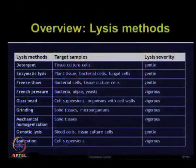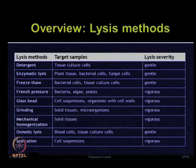Grinding — the mechanical homogenization of solid tissues and microorganisms — is another vigorous lysis method. Osmotic lysis can be used for blood samples and tissue cultured cells, which is a gentle lysis method. Sonication can be used for cell suspensions and bacterial samples, which is another vigorous lysis method.